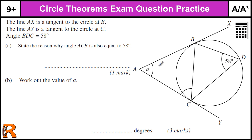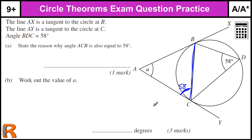We've got tangents, we've got a letter A here. We're told BDC is 58. That angle is formed from this segment, and the angle that segment forms with the tangent is also 58 — that's the alternate segment theorem.